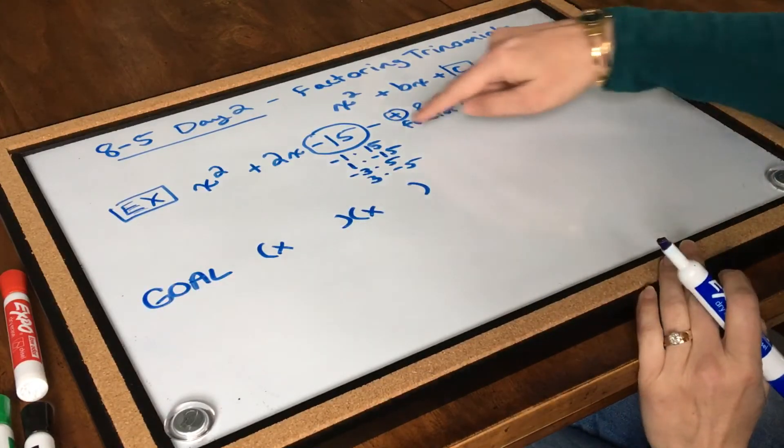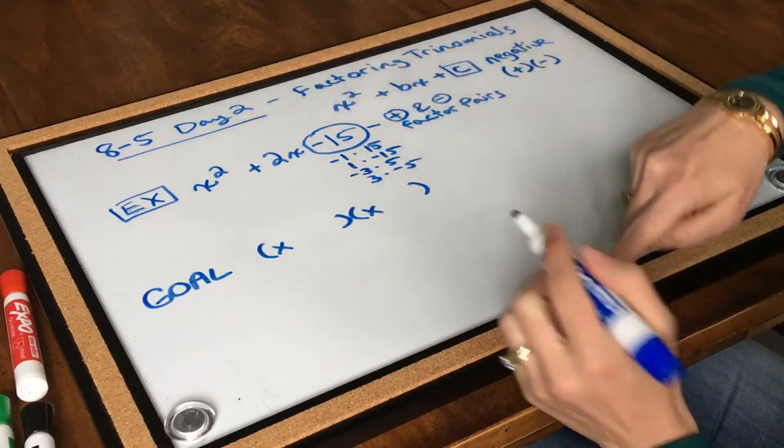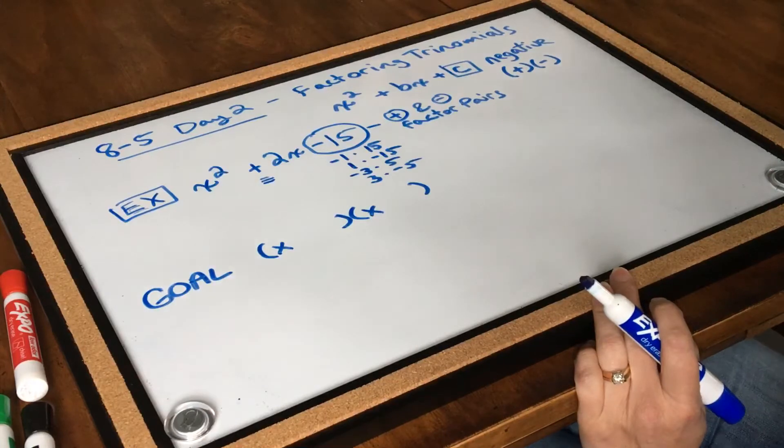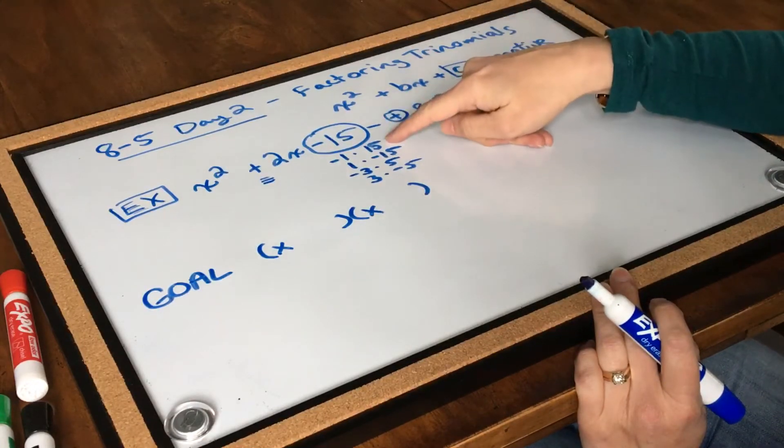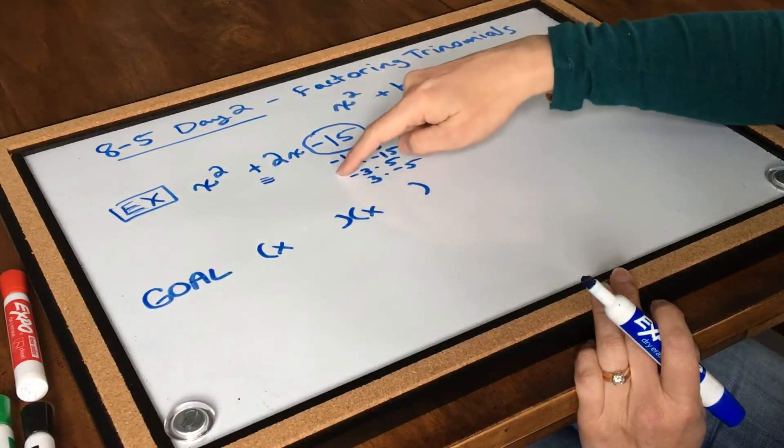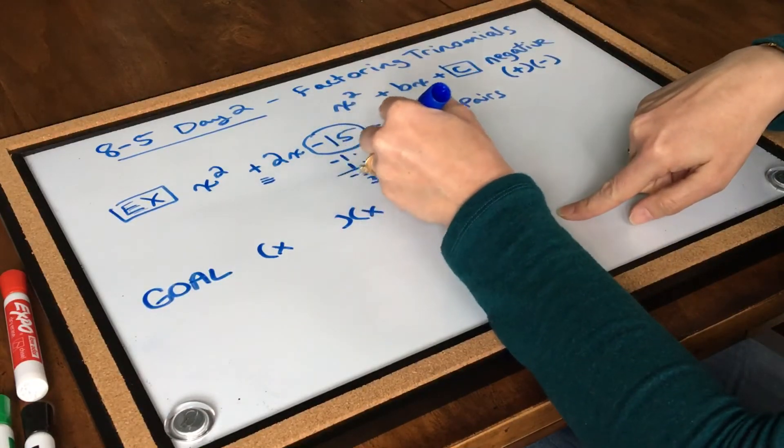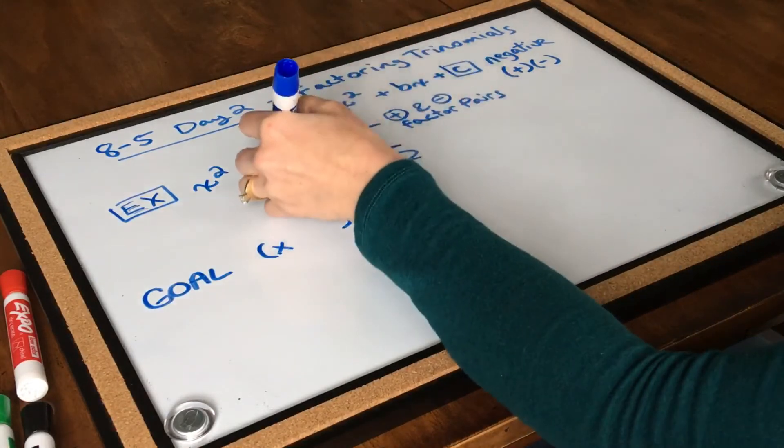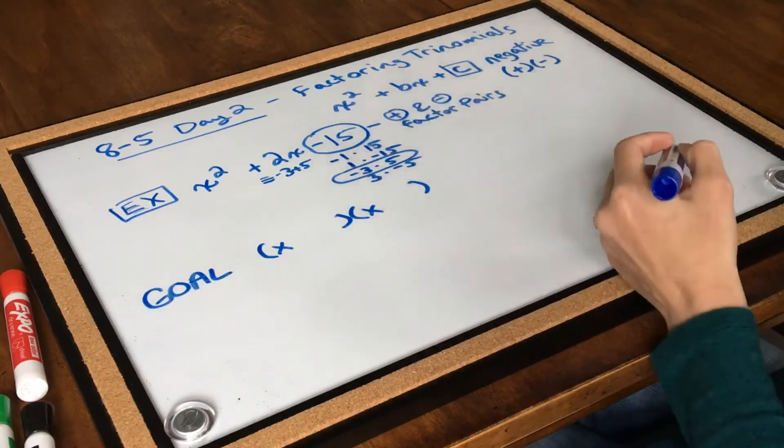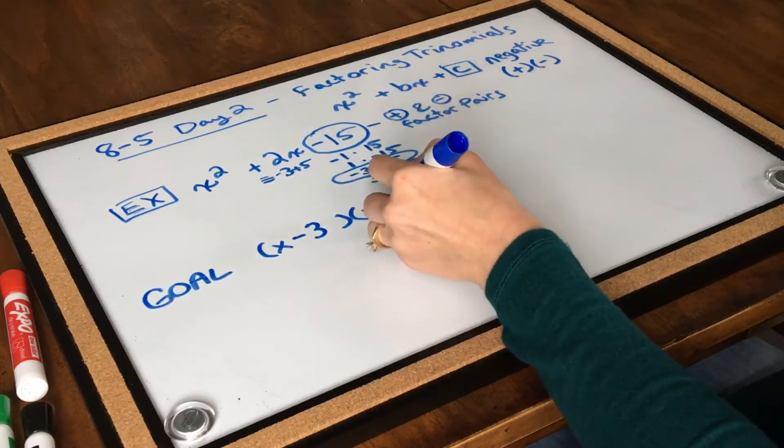Then, of course, as we're looking at these numbers, we need to pick the factor pair that is going to add up to positive 2. And you've got to pay really close attention to your sign here, folks, because if this is positive or negative, it can switch things around for you. Which of these will turn out to be positive 2? It's got to be this one right here. Negative 3 plus positive 5 would give me positive 2. So this one right here is going to be my factor pair choice. Now that I know my pair, I'm just going to plug it into my parentheses. So this one would be x minus 3, and this other parentheses would be x plus 5.